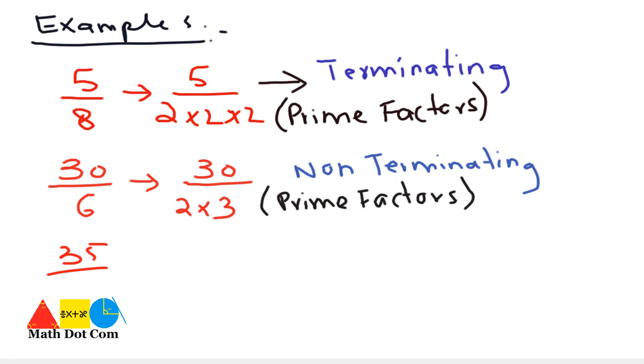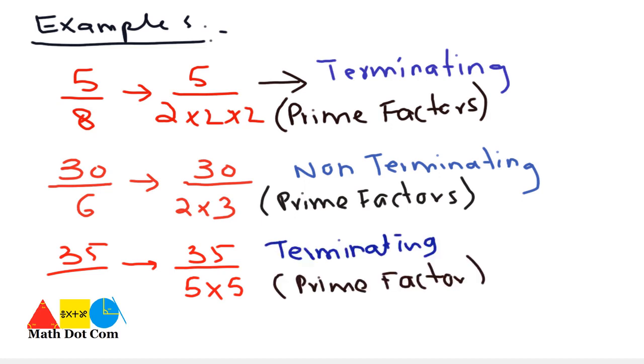Let's check one more example: 35 over 25. We convert the denominator into factors. The factor of 25 is 5. That means it is a terminating number.